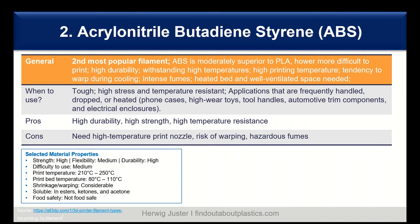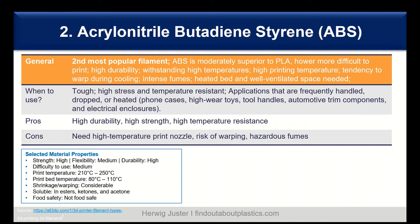Number three is polyethylene terephthalate, PET, and PETG. PETG is the more commonly used filament material, where the G stands for glycol-modified. That results in a filament that is clearer, less brittle, and easier to print compared to regular PET. PETG sits in a good place between ABS and PLA — more flexible and durable than PLA, and easier to print than ABS.